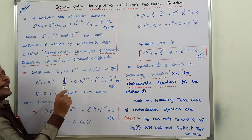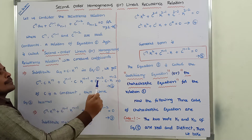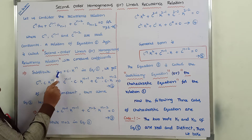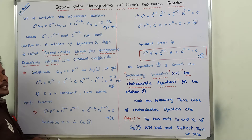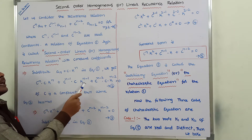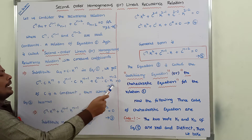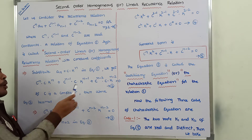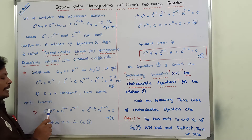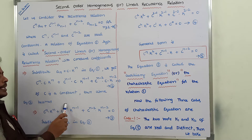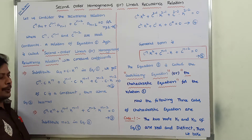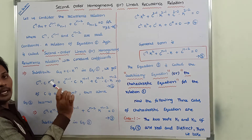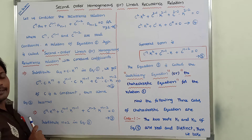After substituting a_n, a_(n-1), and a_(n-2) values in equation 1, we get equation 2. Since c is a constant, after removing c from equation 2 we get equation 3: c_n times k^n plus c_(n-1) times k^(n-1) plus c_(n-2) times k^(n-2) equals 0.